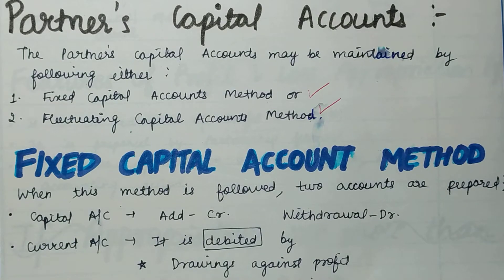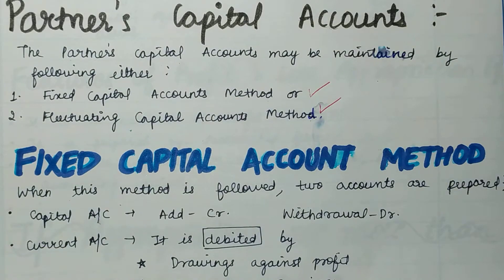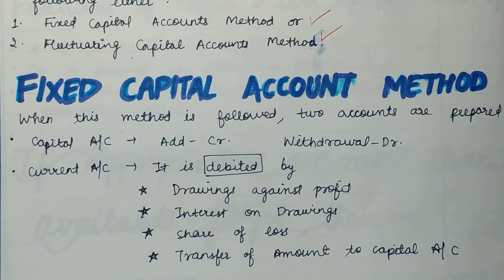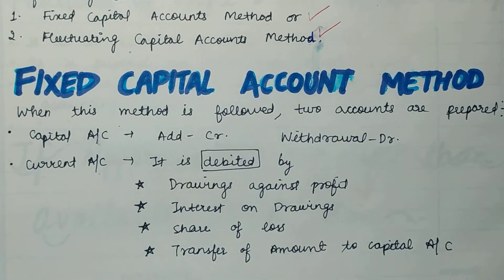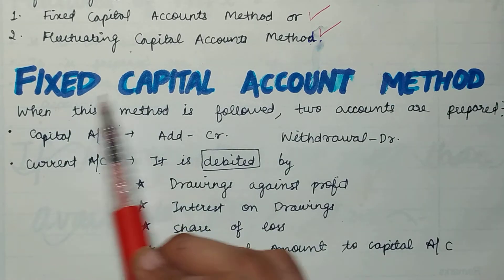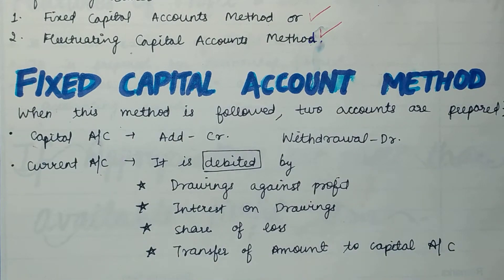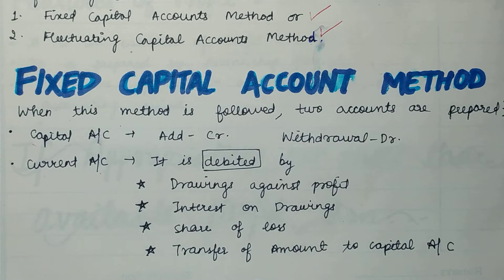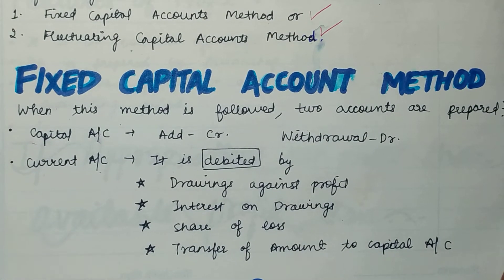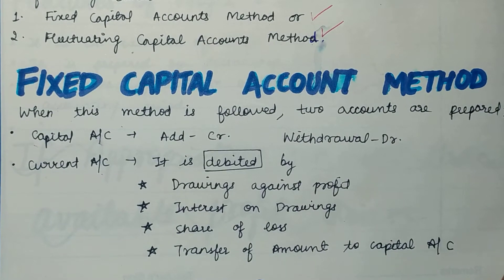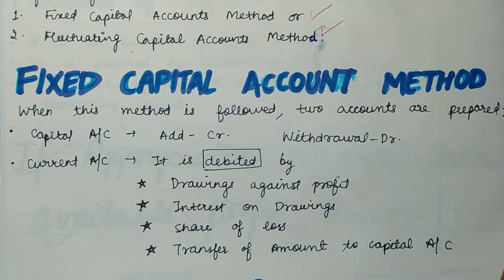Some firms follow the fixed capital account method and some follow the fluctuating capital account method. In the fixed capital account method, if a partner has invested some capital in the firm, it will remain fixed — it will not change unless he adds additional capital or withdraws capital. That is the fixed capital method.